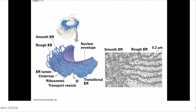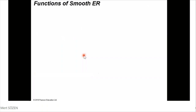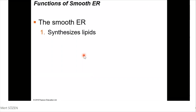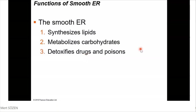In this picture, you can see the endoplasmic reticulum and its rough and smooth parts. The functions of smooth ER include: synthesizing lipids, metabolizing carbohydrates, and detoxifying drugs and poisons. Detoxification reactions are done in the smooth ER as well. Also, in some cells, smooth ER stores calcium ions and, when necessary, secretes those calcium ions into the cytoplasm.